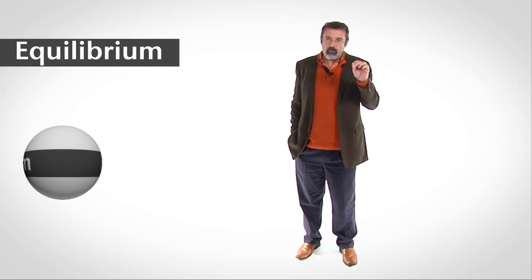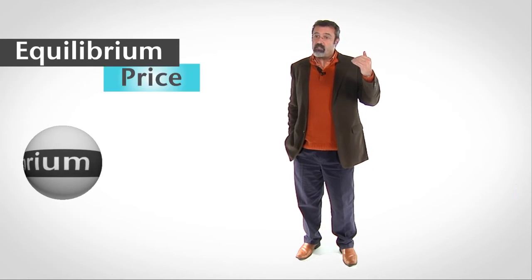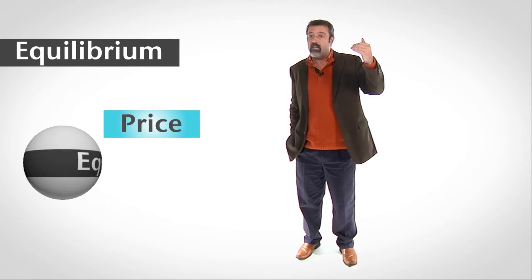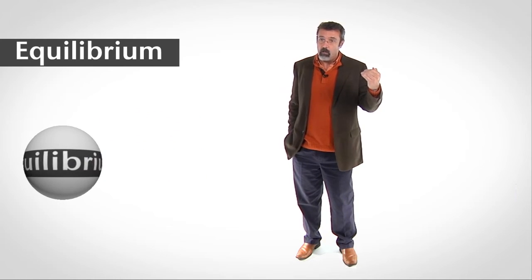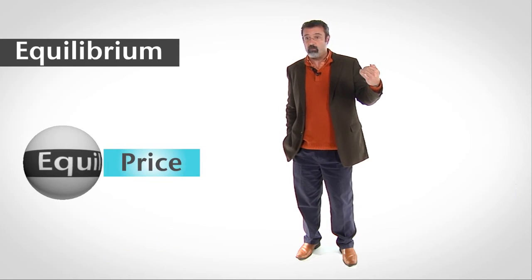Equilibrium is like a center of gravity that's always pulling price toward it. When a price is too high, we get a surplus, and the surplus causes the price to fall. When a price is too low, we get a shortage, and the shortage causes the price to rise.